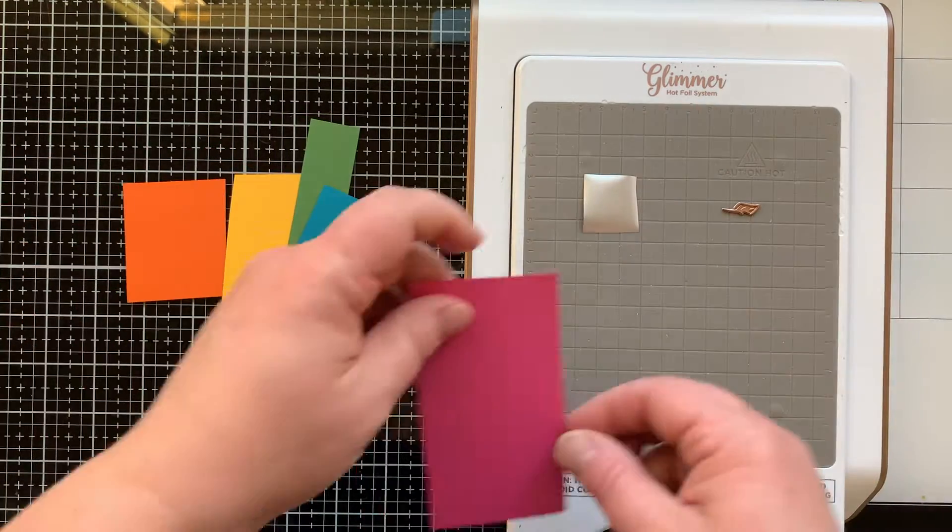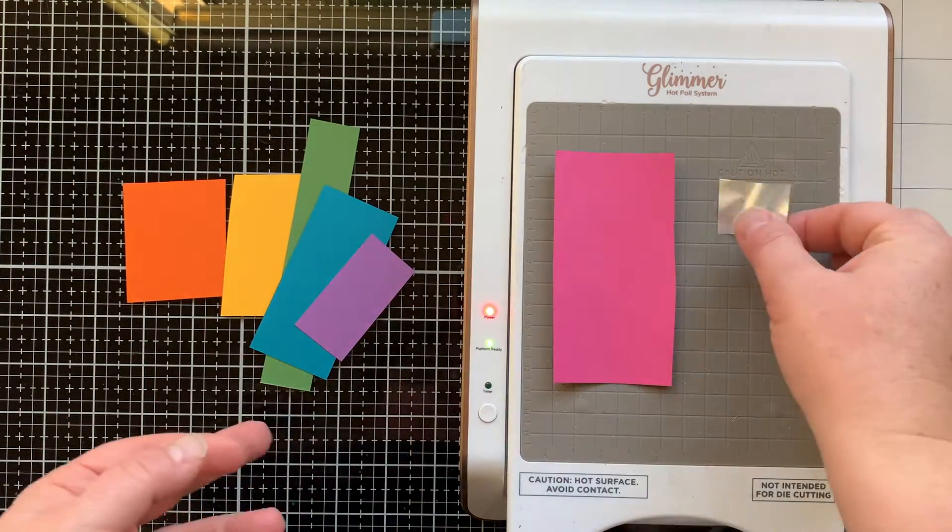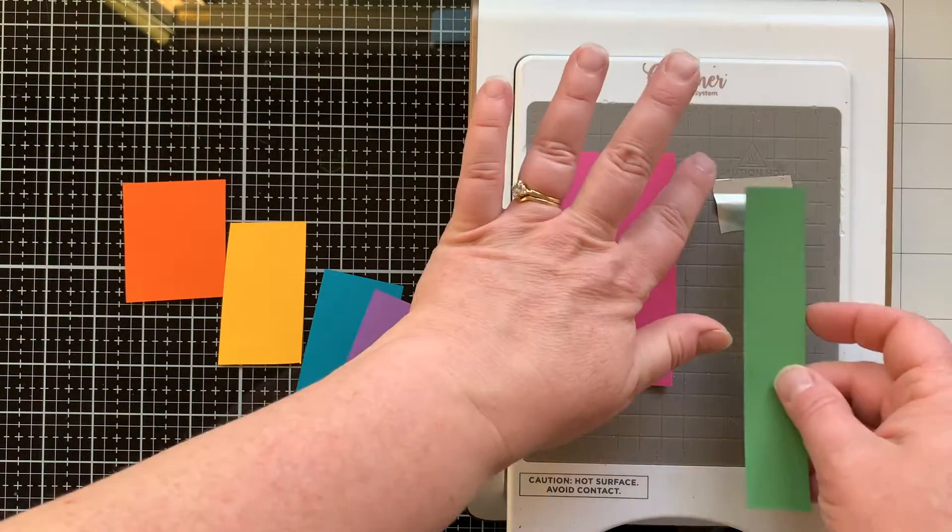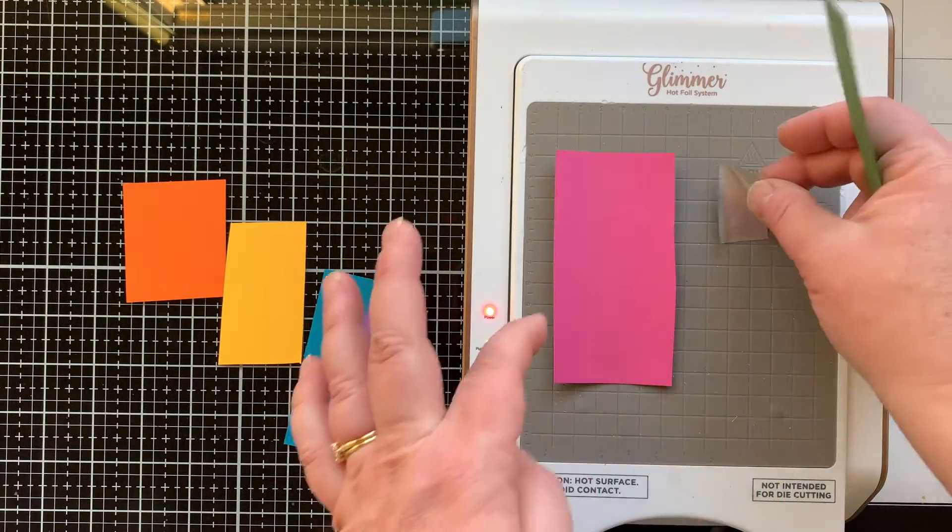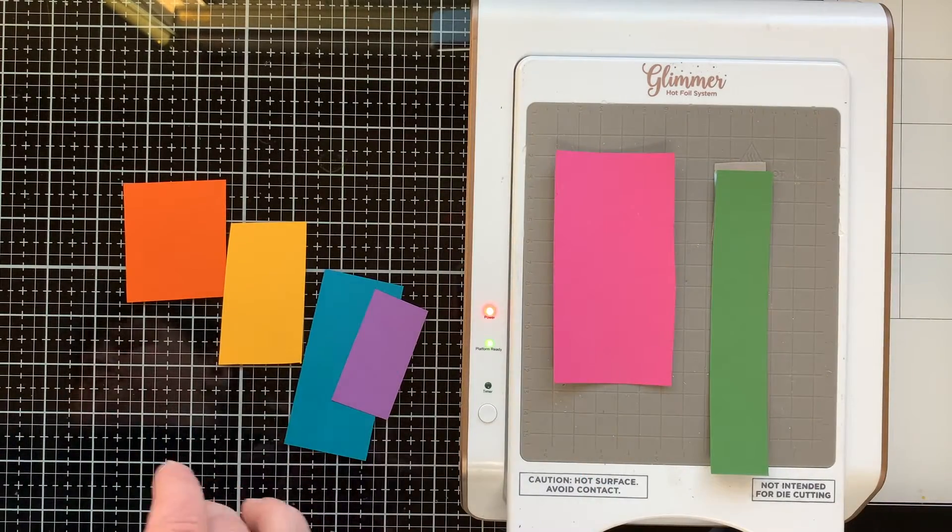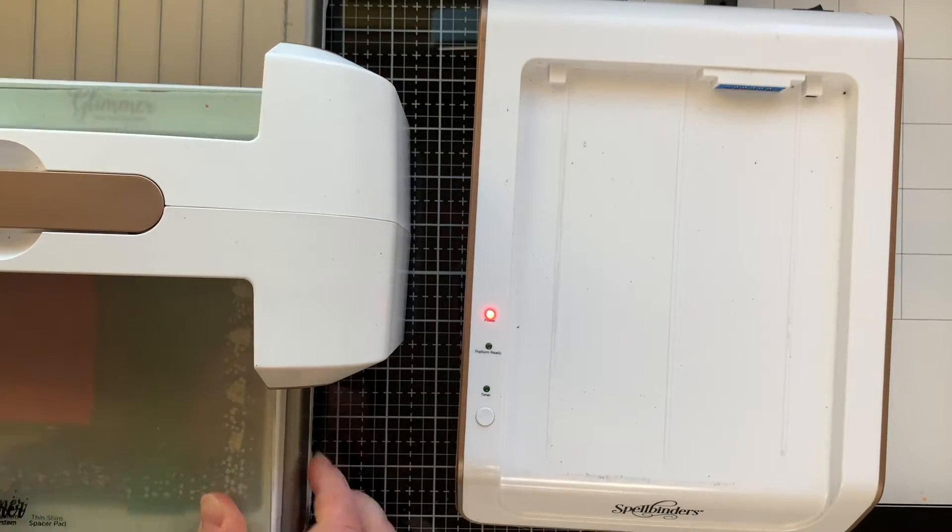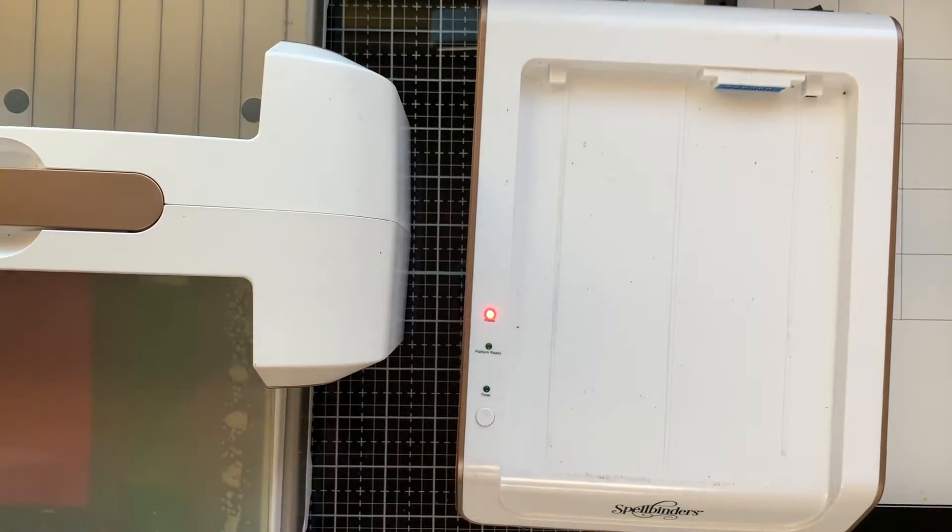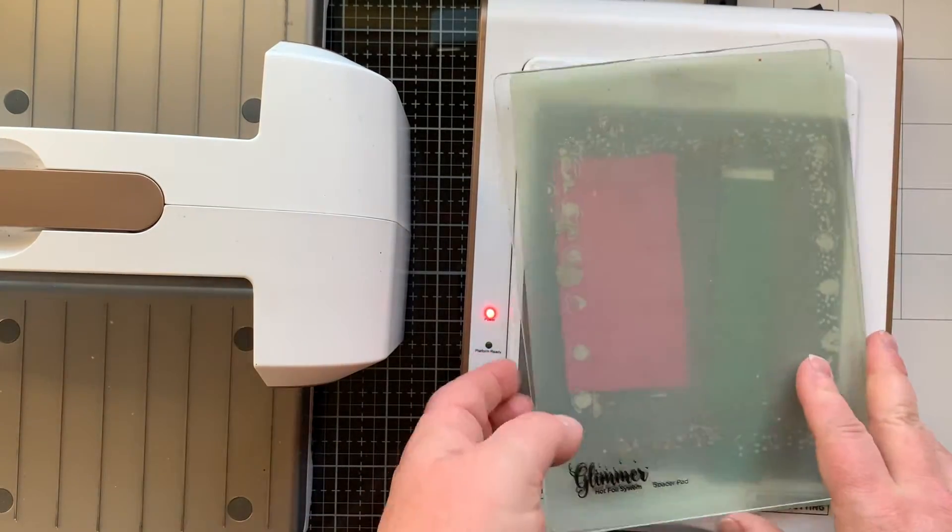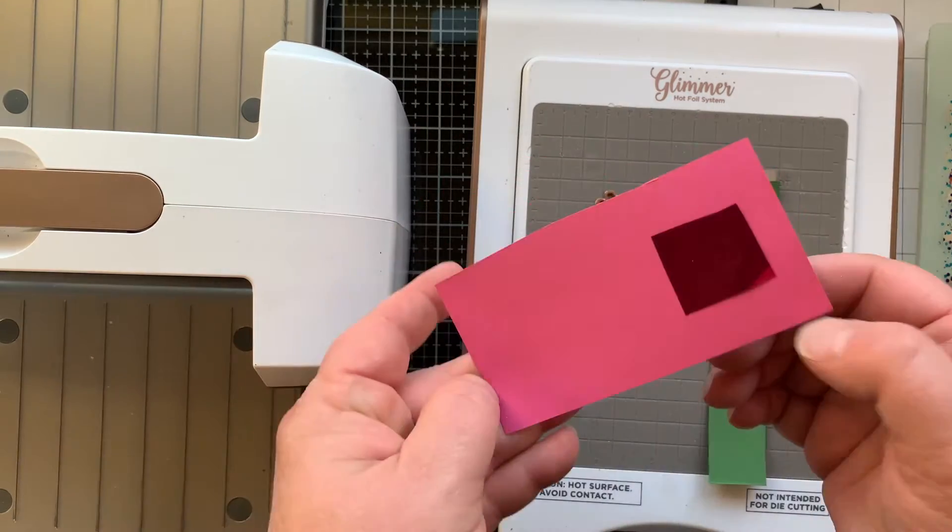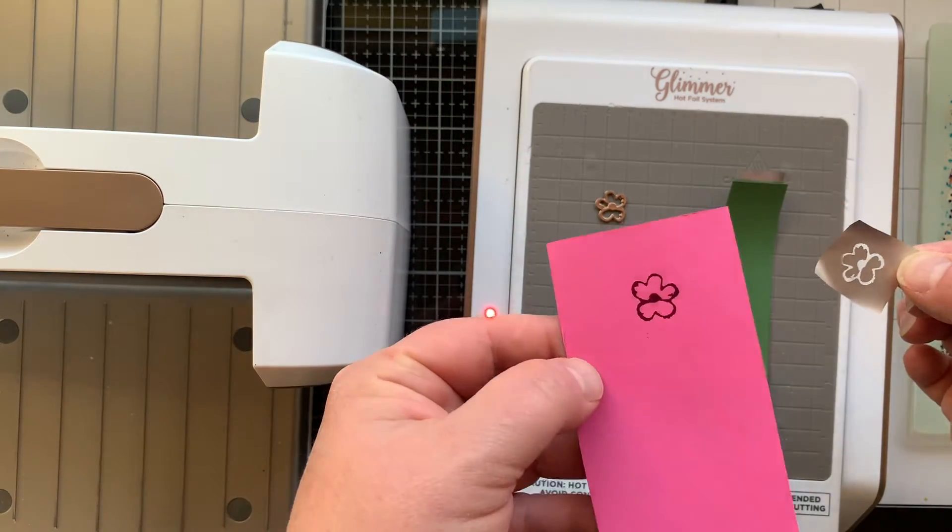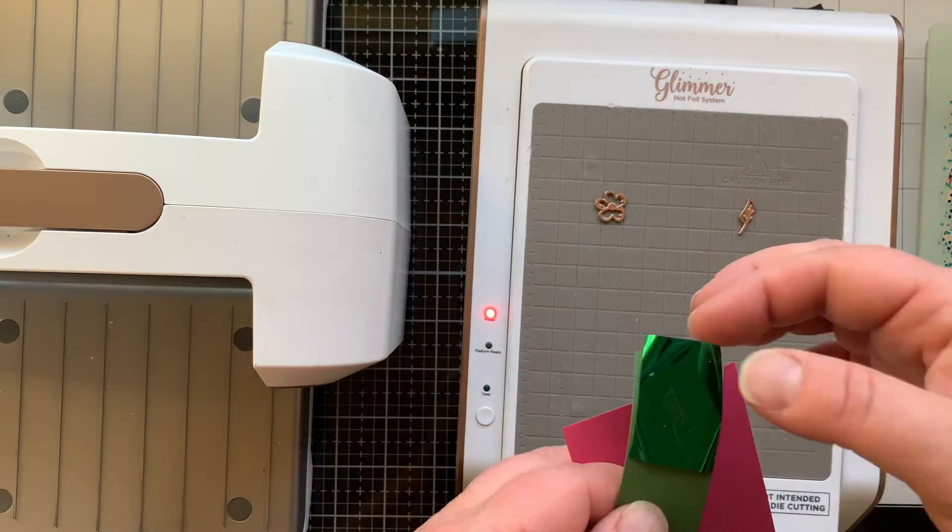These are the two plates that Glimmer Hot Foil to make a flower and a leaf. So I'm putting my plate face up, the foil pretty side down, cardstock over the top of that. I'll press the timer and add my two plates. Once the timer's gone off, it's hot enough and ready to go. I'll run that through my die cut machine right on the plate that comes with the Glimmer Hot Foil. And then when you remove that foil, you have a gorgeous foiled flower and leaf.